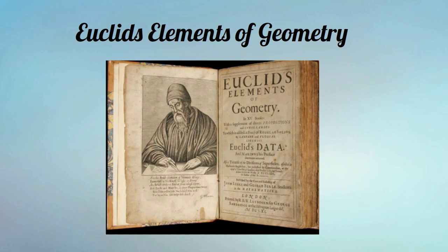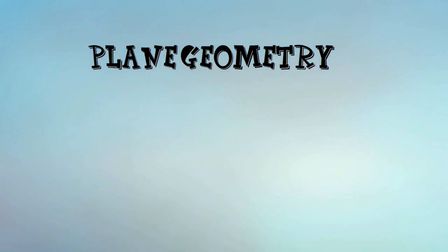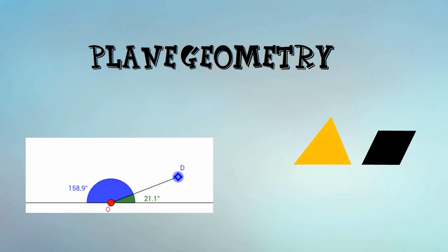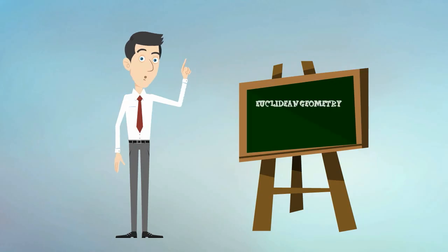Euclidean Geometry can also be called Plane Geometry because it is the study of lines and shapes on a flat surface. Euclidean Geometry can be illustrated on flat paper or chalkboard.